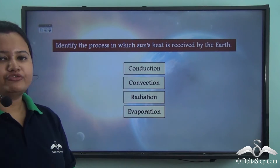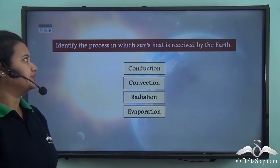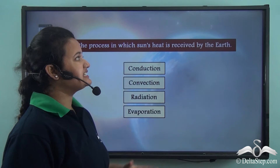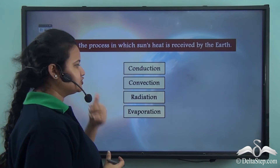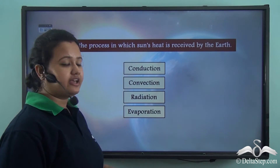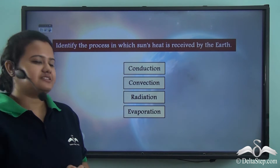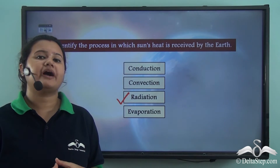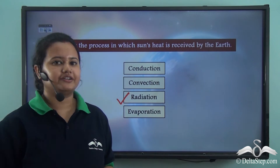Now let us answer this question: identify the process by which the Sun's heat is received by the Earth. Is it conduction, convection, radiation, or evaporation? The correct answer is radiation. We just learnt that radiation is the process by which heat is transferred from the Sun to the Earth.